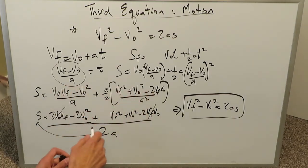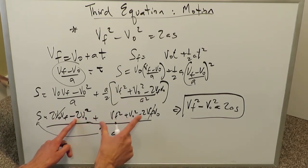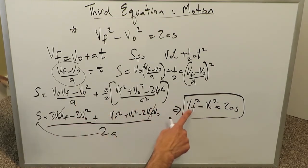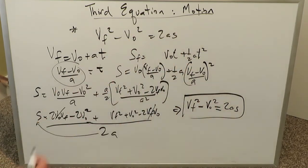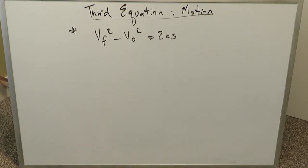To recap the algebraic derivation: we used a common denominator of 2a, the a went into 2a twice, terms opened up, 2·vo·vf canceled, and combining the vo squared terms gave minus vo squared plus vf squared, yielding vf squared minus vo squared equals 2as. The integral calculus derivation is actually interesting and drives home the point that calculus simplifies many algebraic derivation procedures, which is why calculus has many more merits than algebra.